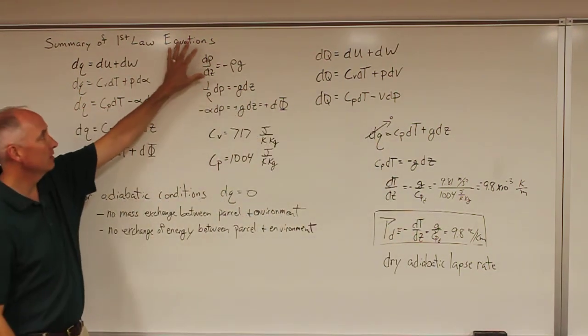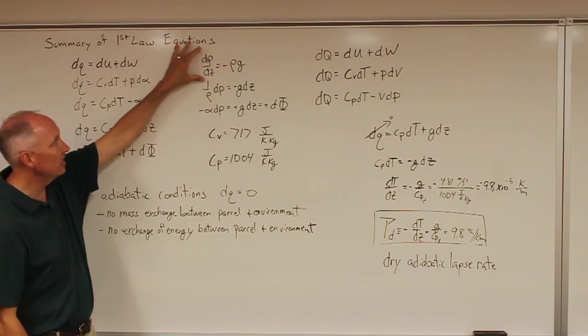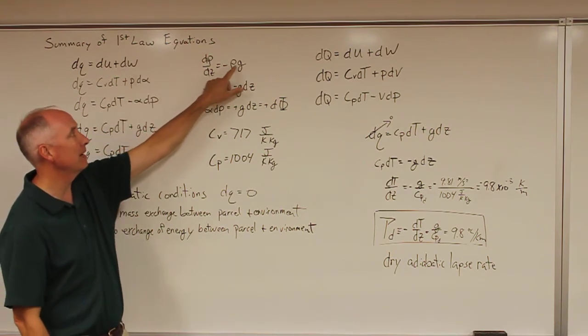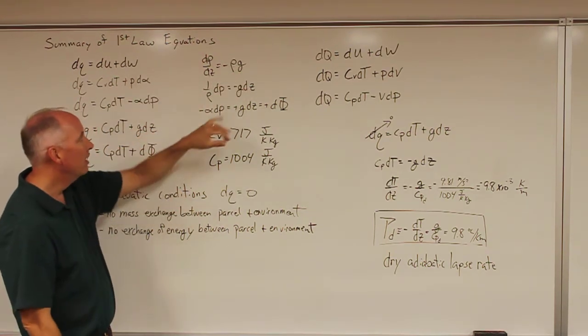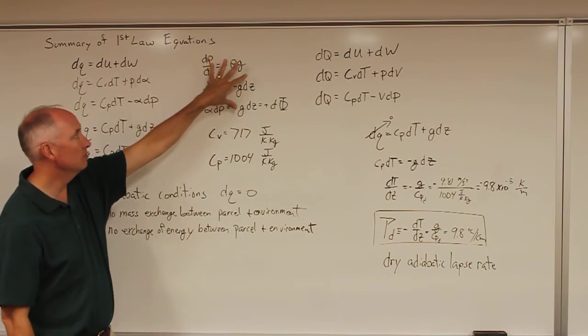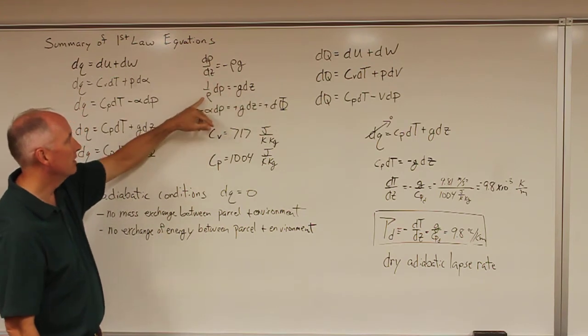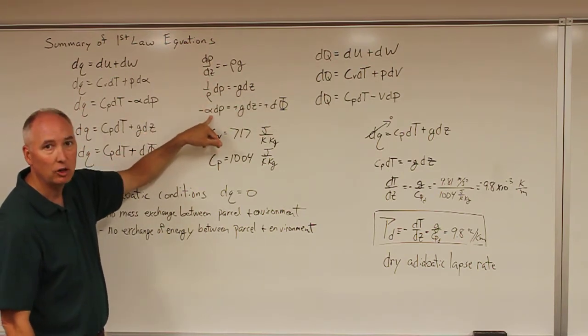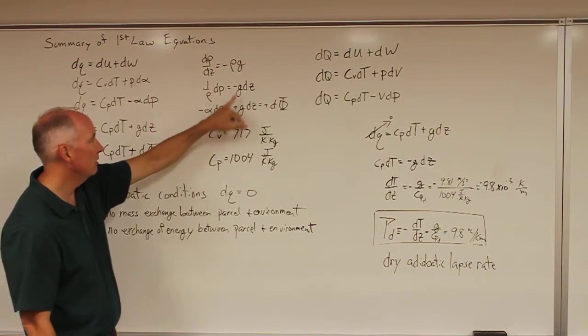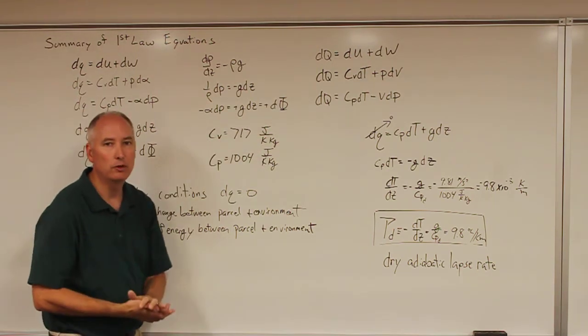So the first law of the hydrostatic equation states that dp by dz is equal to minus density times gravity. Just bringing the density over to this side and the dz to that side, one over the density is equal to the specific volume times dp is equal to gdz.